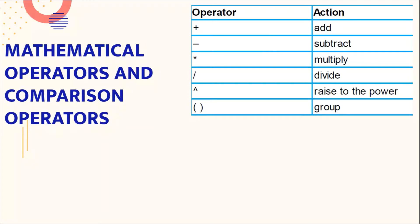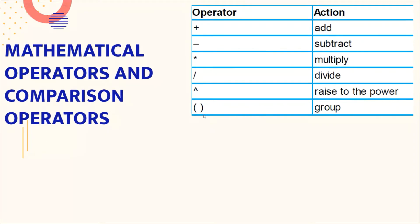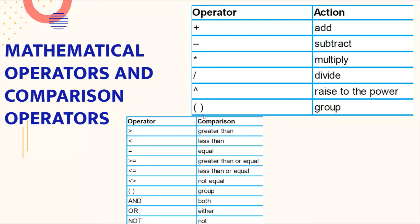The plus symbol is for addition, the minus symbol is for subtraction, the asterisk symbol is for multiplication, the slash symbol is for division, and the caret symbol is for raise to the power. Brackets are used to group expressions.